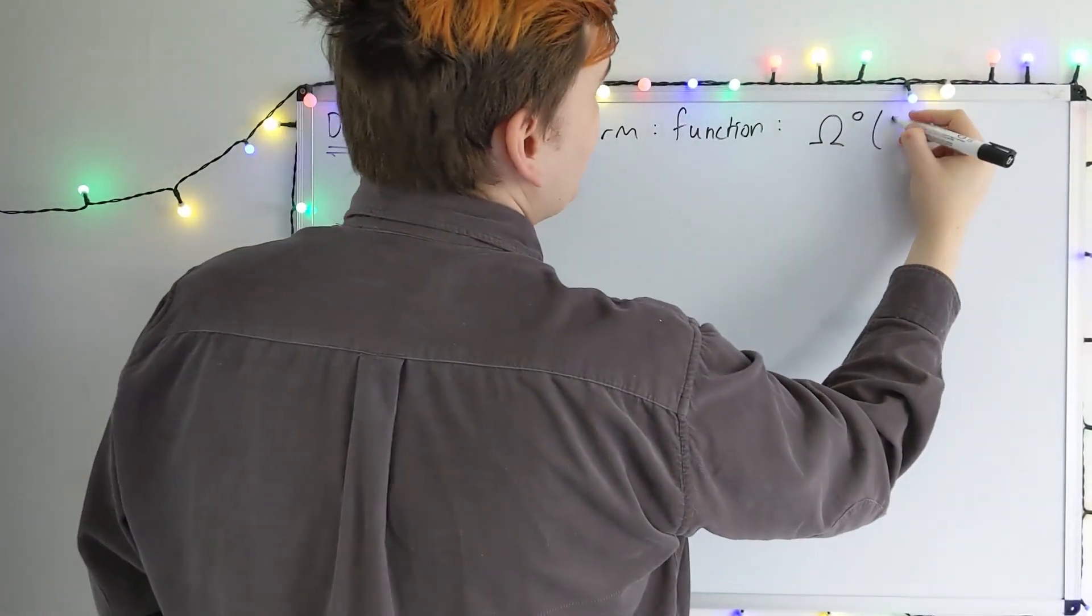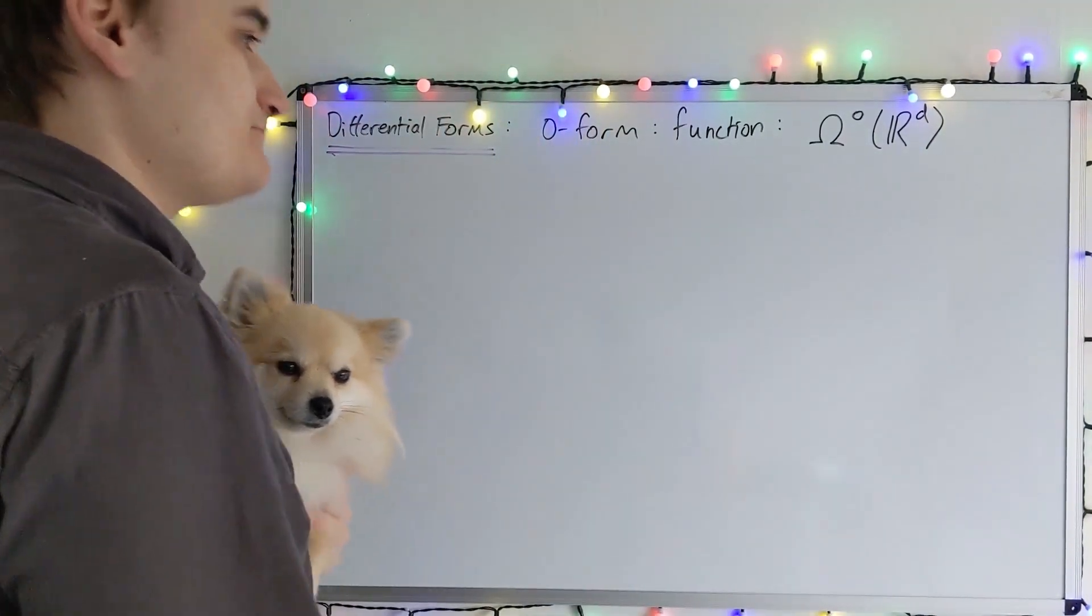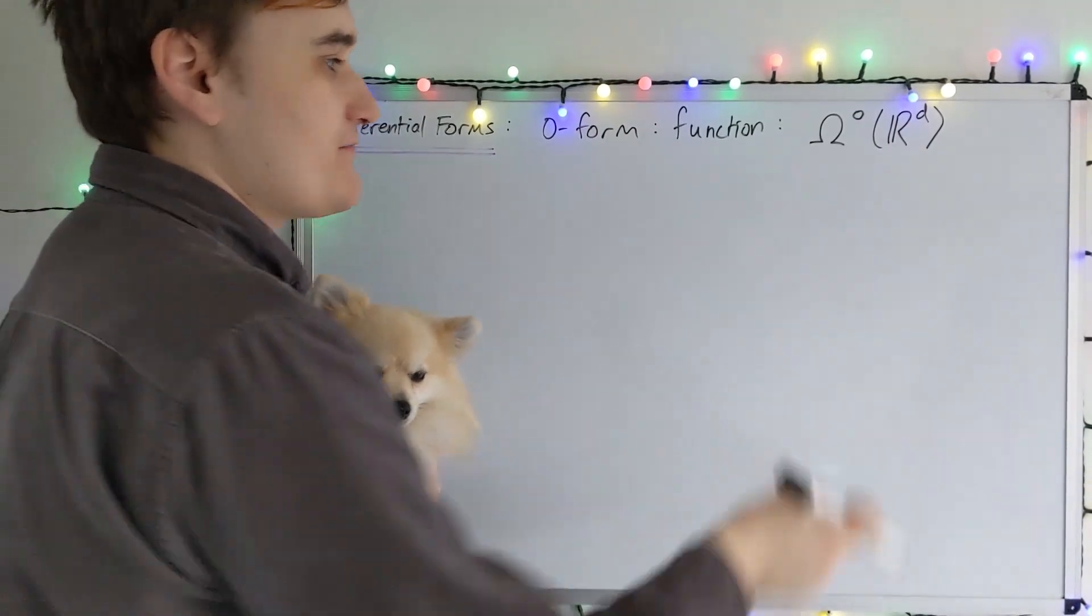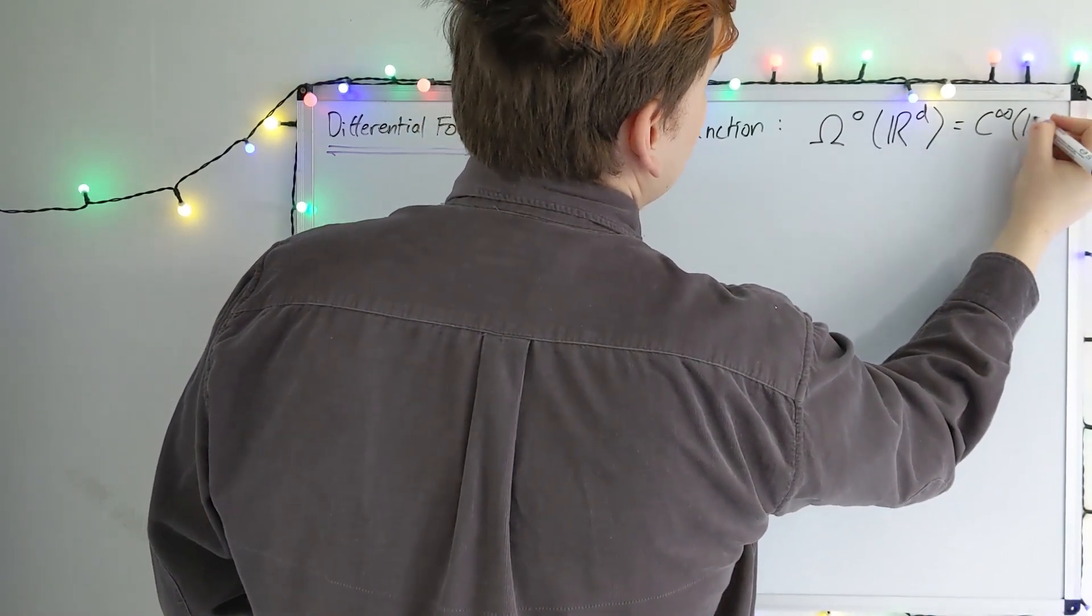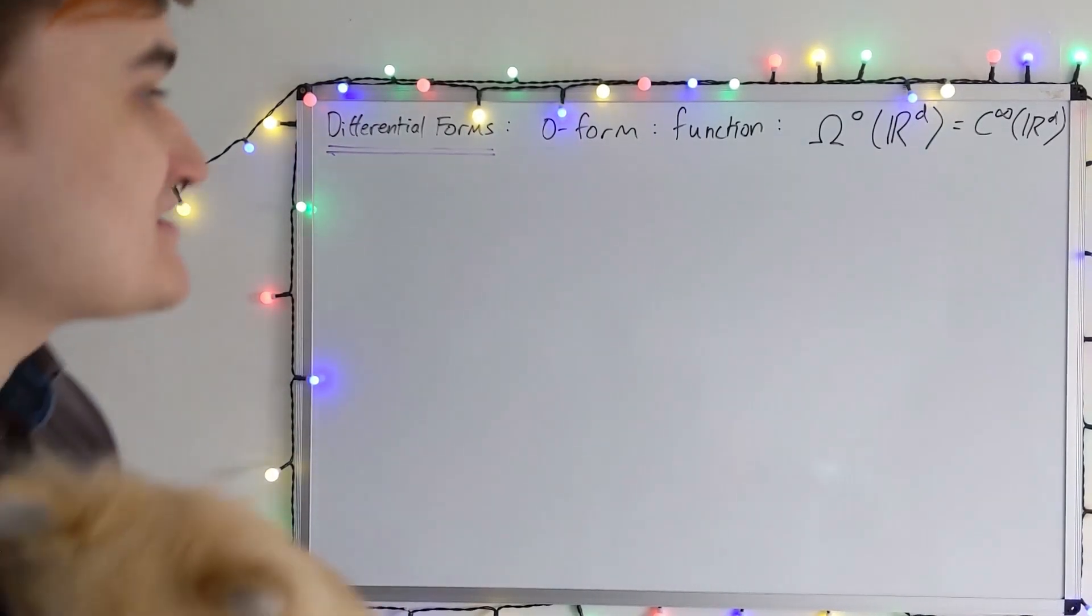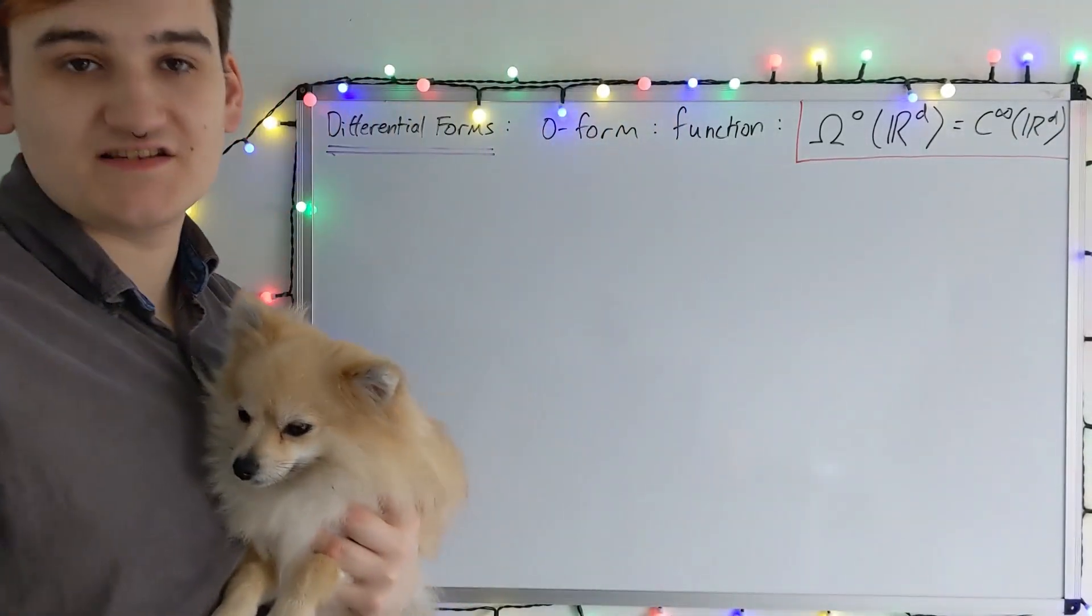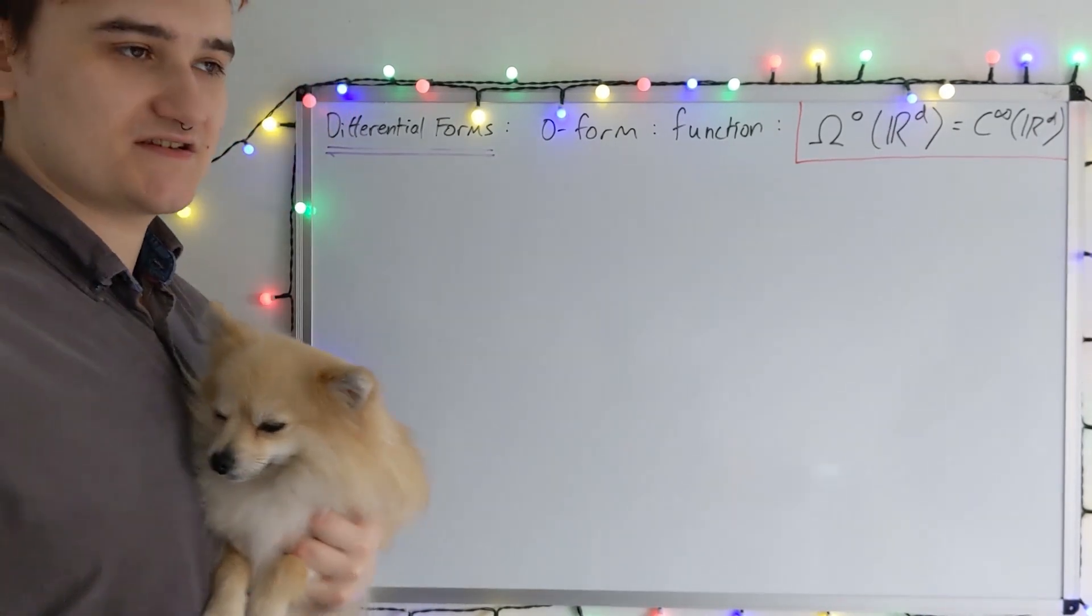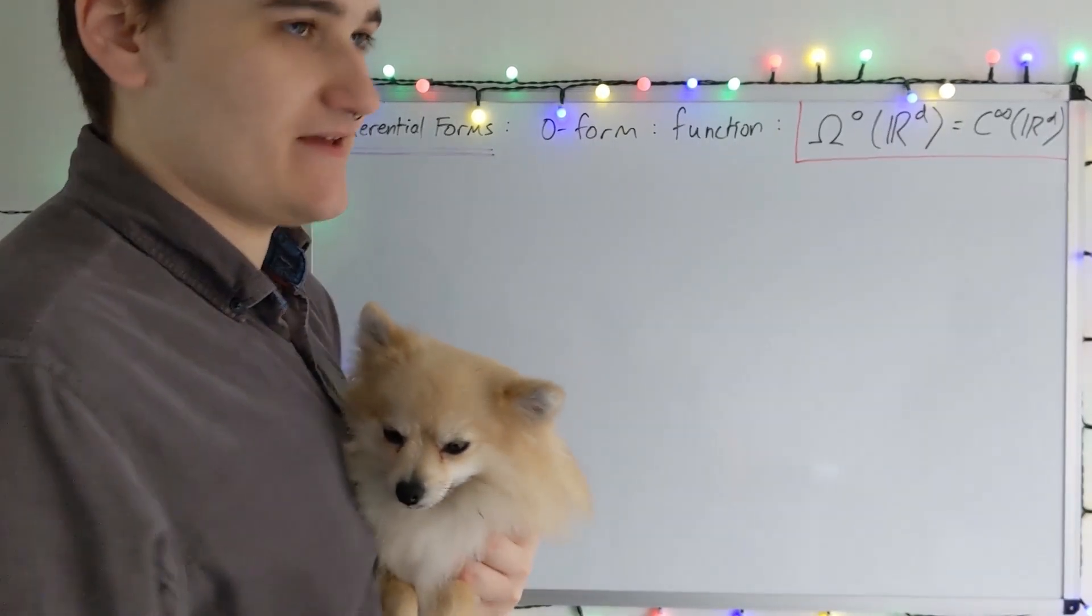So the space of all zero forms now over R^d, which is the space that we're talking about. So with this definition that zero forms are functions, we identify the space of all zero forms is just simply the space of all smooth functions. Okay, so this is just a simple redefinition or realization. Functions are zero forms. So, okay, nothing new has happened yet. I've just sort of identified or relabeled functions to be zero forms.